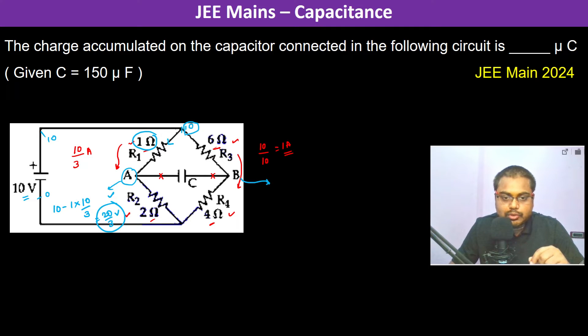At point B, the potential is 10 minus 1 times 6, which equals 4 volts.